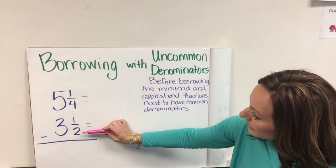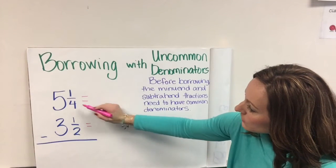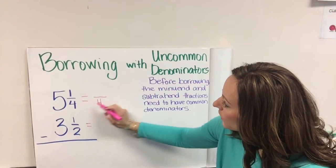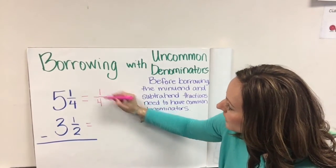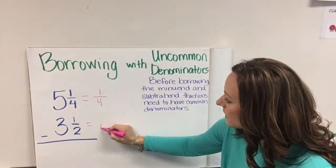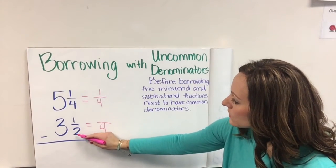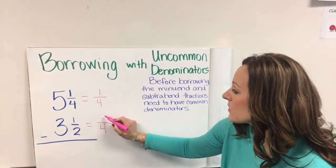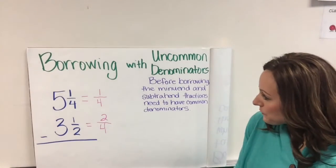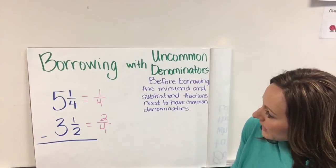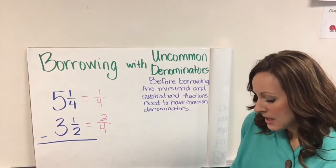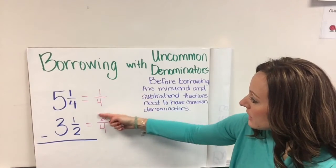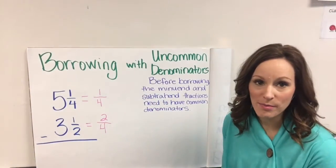I can already tell that my least common denominator between 4 and 2 is going to be 4, because 4 can go into 4, so this fraction will stay the same. And 2 can go into 4 two times, so since 2 times 2 is 4, 1 times 2 is 2. Now I have a fraction that I can subtract; however, I have a 1 here and a 2 here, so I have to do some borrowing.